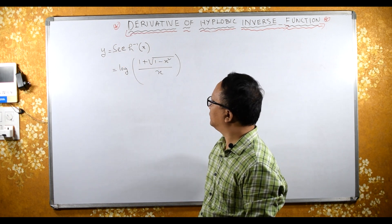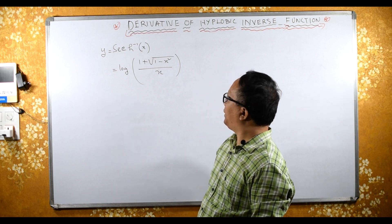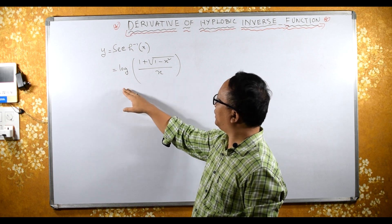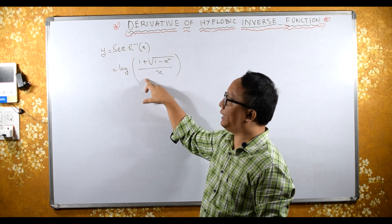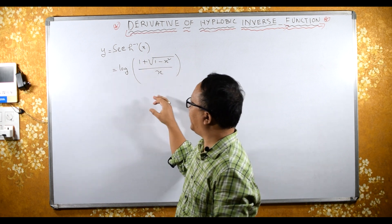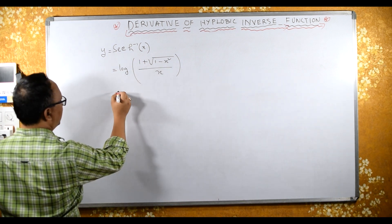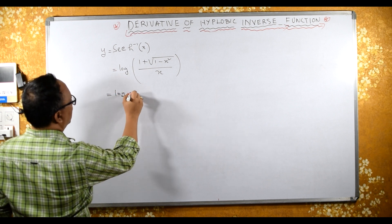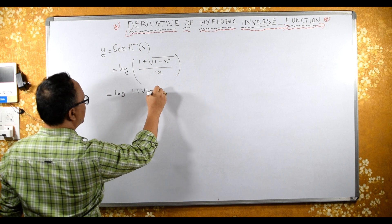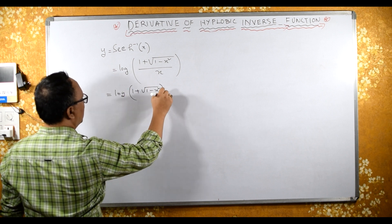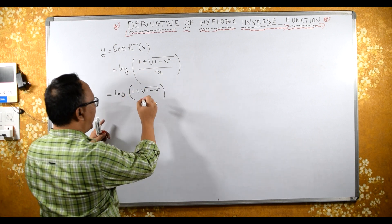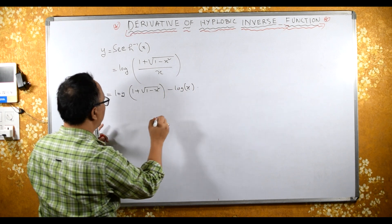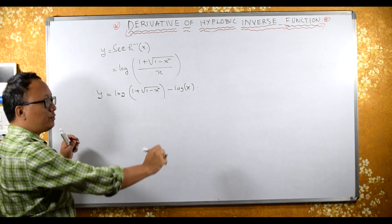We can solve this two ways. First, we can use the log property: log(m/n) is the same as log(m) minus log(n). Before differentiating, let's rewrite: this is the same as log of (1 plus square root of 1 minus x²) minus log(x). This is our y.